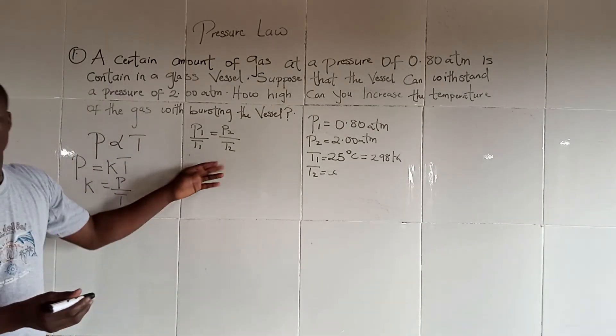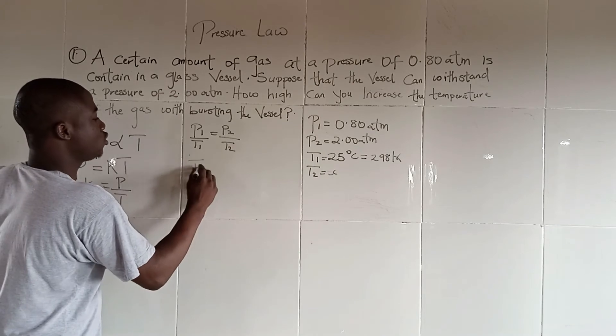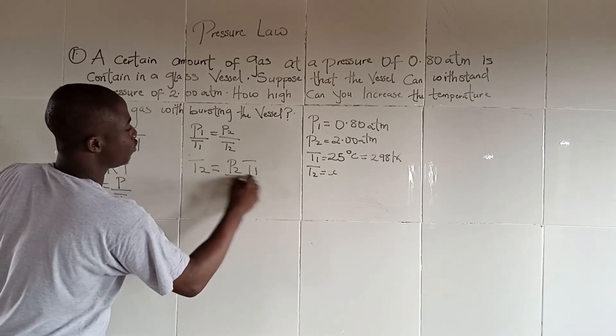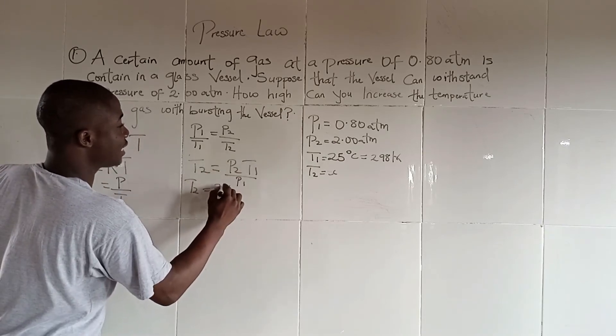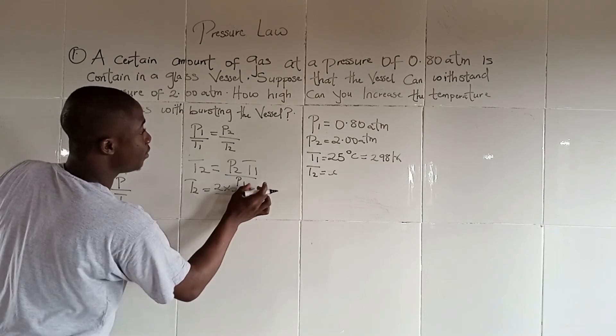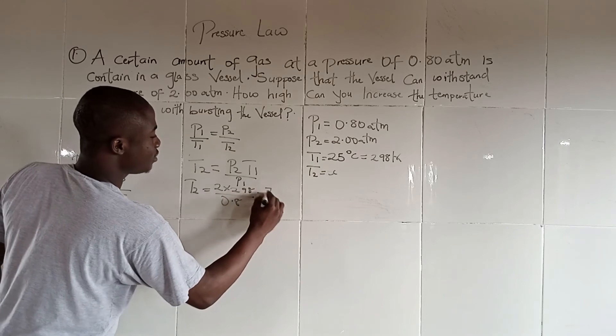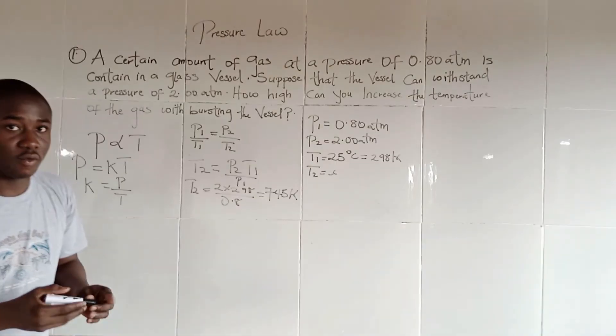With this equation written on the board, we can get T2 just by making T2 subject. It becomes P2 T1 over P1. Whereby T2 becomes P2, 2 times T1, 298 over P1 which is 0.8, so we get 745 Kelvin.